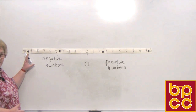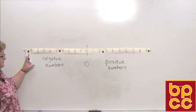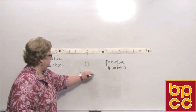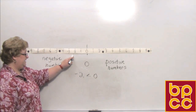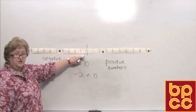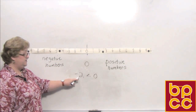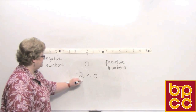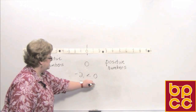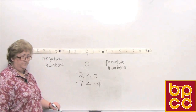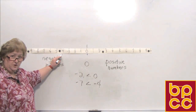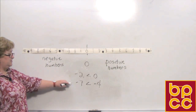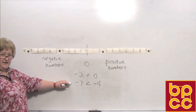Let's do some comparison with our inequality signs. Let's say negative 2 is less than 0. Here's negative 2 and here's 0 on the number line — 0 is to the right, so negative 2 is less than 0. How about negative 7 is less than negative 4? Here's negative 4 on the number line, and you can see that it is to the right of negative 7. So negative 7 is less than negative 4.